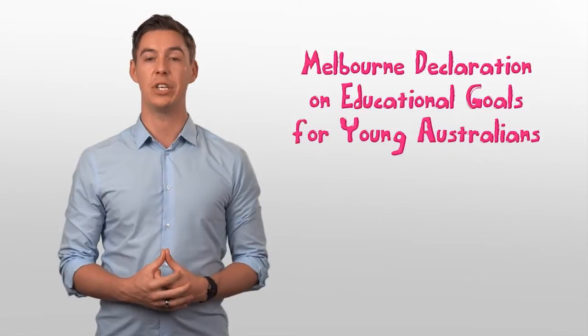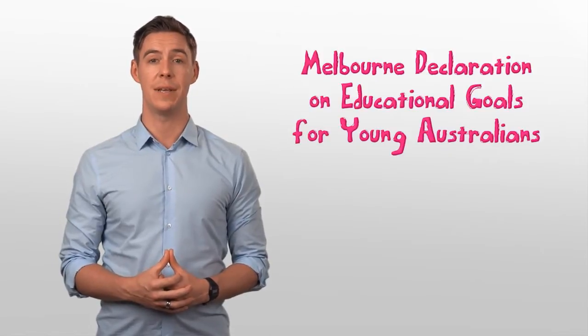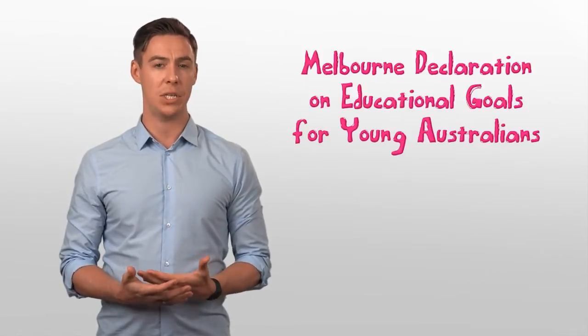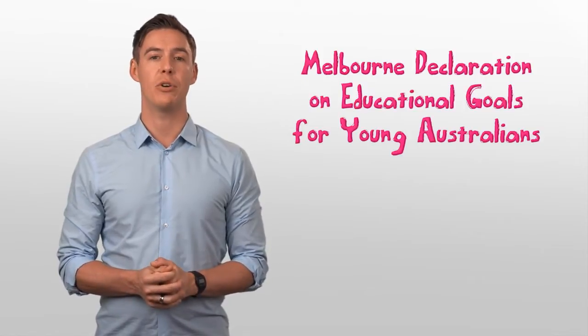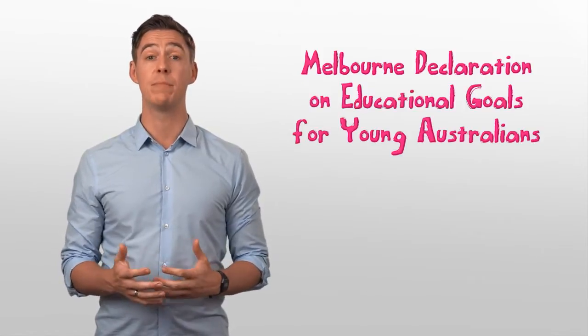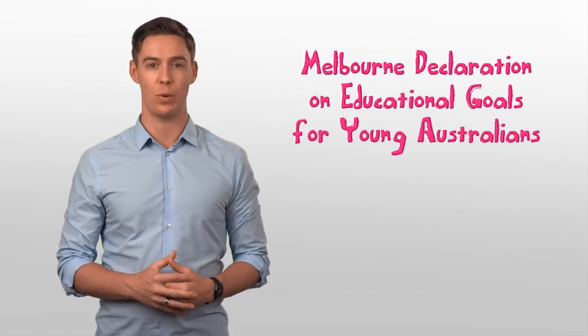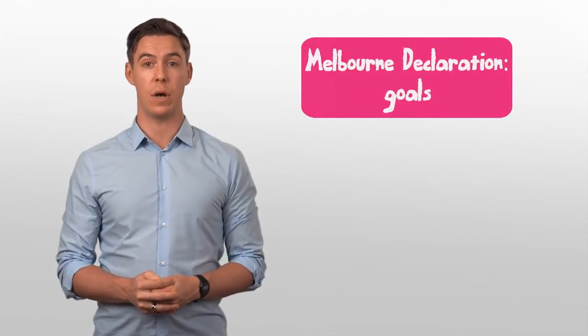The Melbourne Declaration on Educational Goals for Young Australians captures what Australian education is trying to achieve. This declaration creates a vision of Australia as the best performing education system in the world. It is guided by two very important goals.